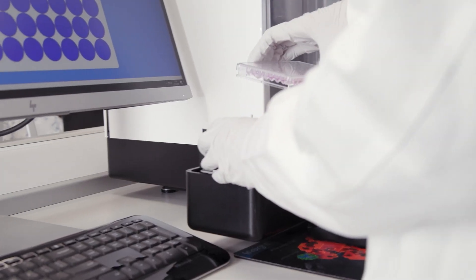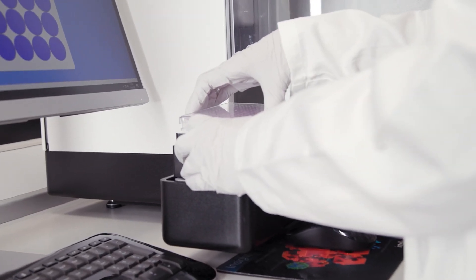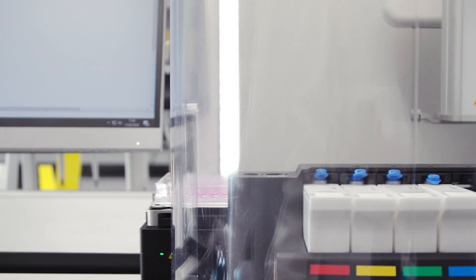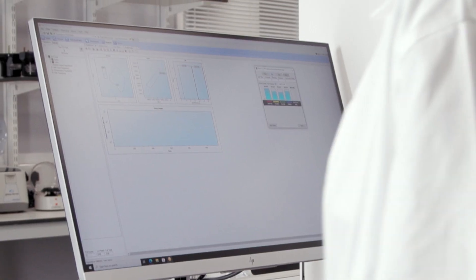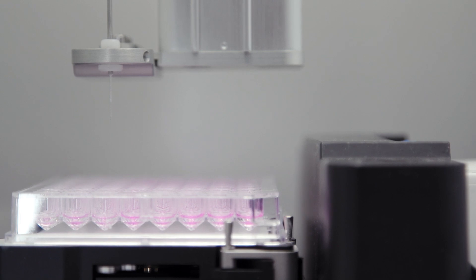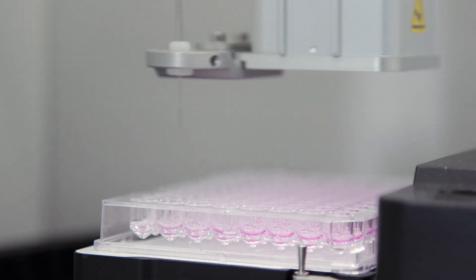Simply place your microplate on the sample shaker, begin the program, and walk away. Micro-volume sampling offers extremely rapid processing, allowing an entire 96-well plate to be processed in under five minutes.